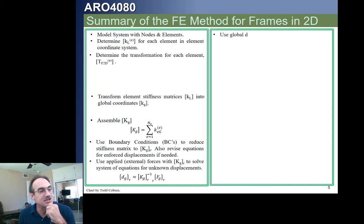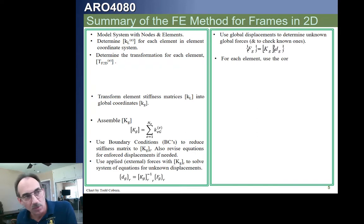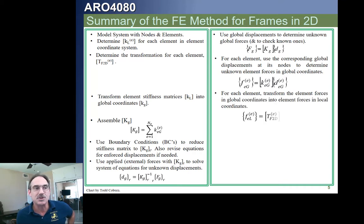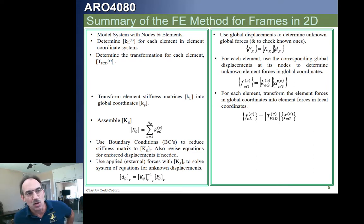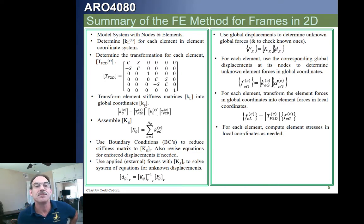We then apply our boundary conditions and calculate our unknown displacements. We use the unknown displacements to calculate the external and applied forces. We then use the global displacements along with the global stiffness matrices to calculate the global forces at each node for each element. Finally, we can transform those global forces into local forces, and we can also calculate stresses.